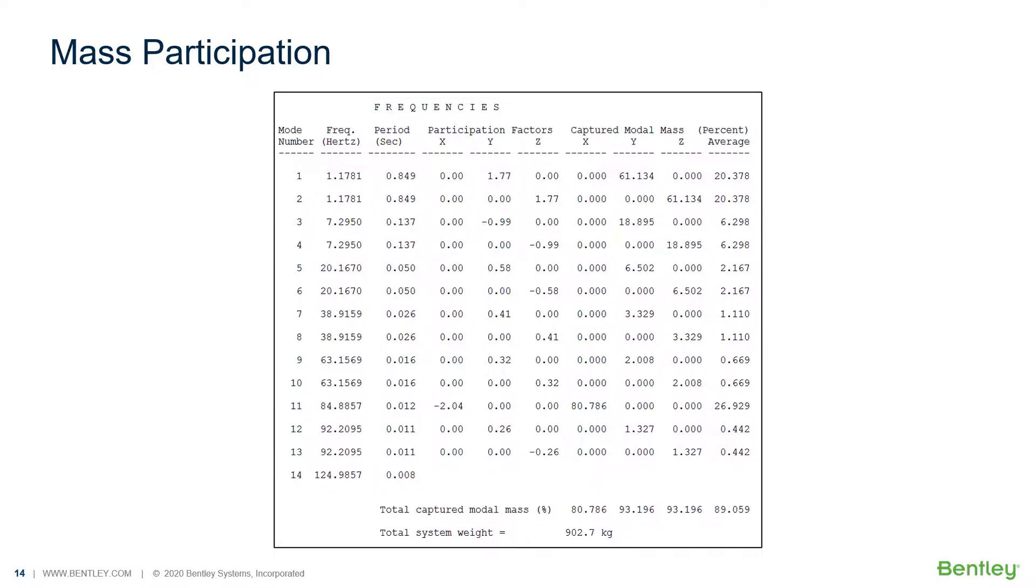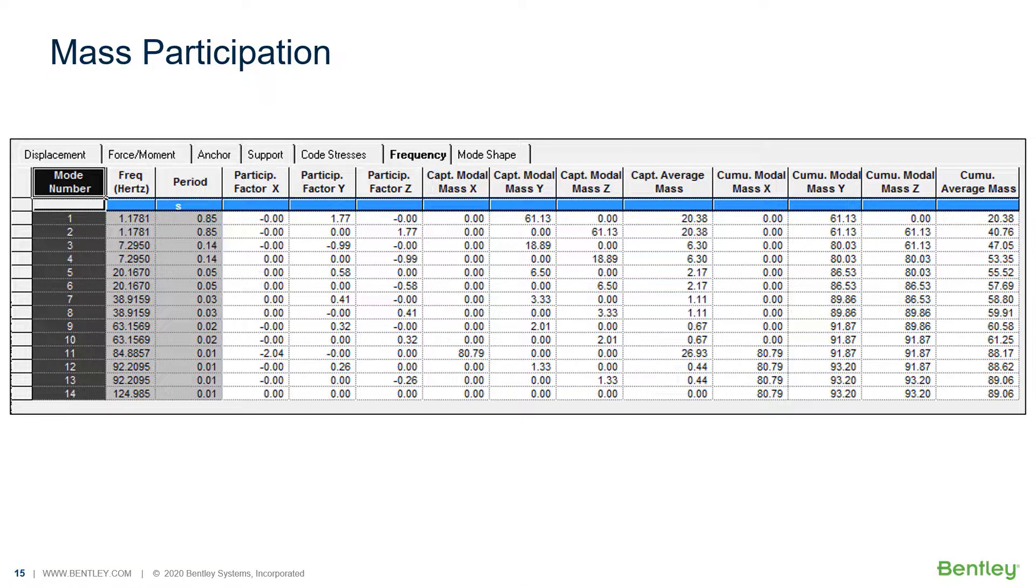So, we do have missing mass correction techniques available. Along with the frequency report, we also have a frequency tab on the result grid, which is similar, and that is what is being shown here. This is what we will be using most often in the workbook examples going forward in the dynamic analysis training classes.